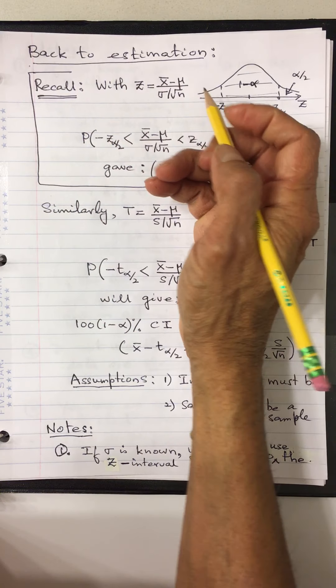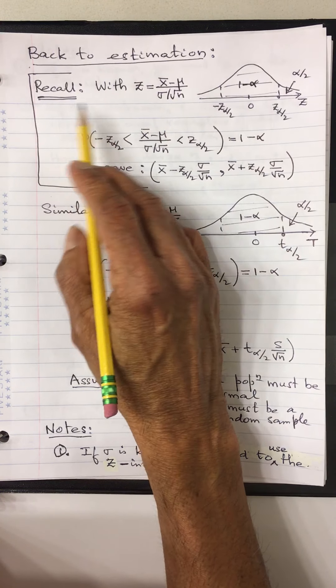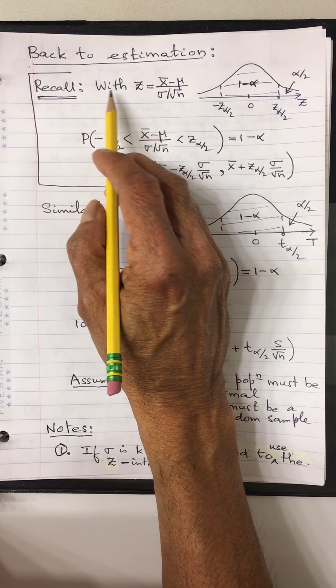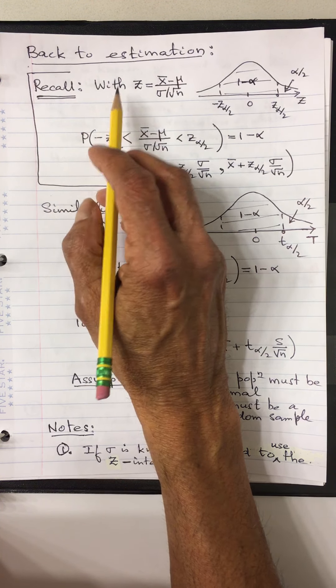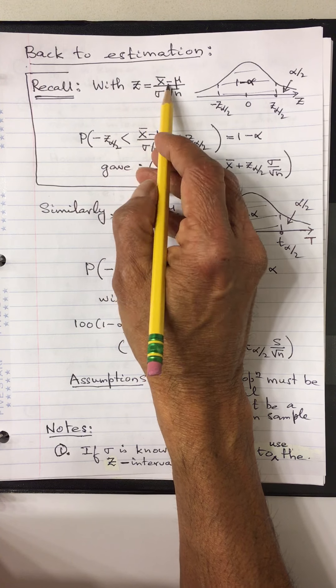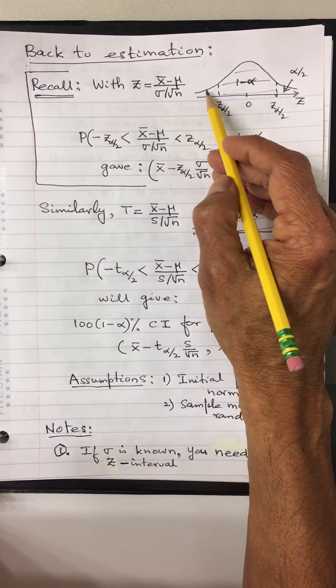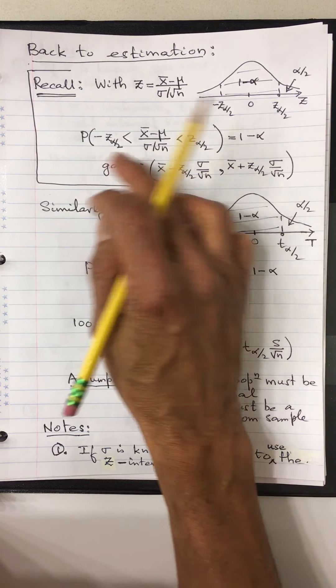Back to the estimation problem. In the very beginning, we said that when this thing follows a z-curve, we use that curve — basically we use this probability statement — and eventually we ended up with this confidence interval for μ. We started with this and it gave us this confidence interval.